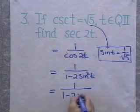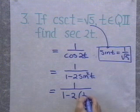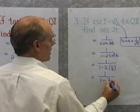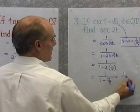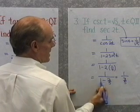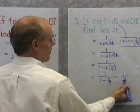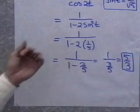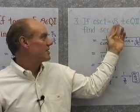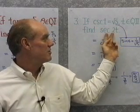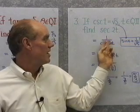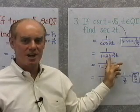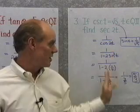So sec(2t) = 1 / (1 - 2sin²t). That's the double-angle formula for cos(2t) written in terms of just sine. Substituting: sin(t) = 1/√5, so sin²t = 1/5. Therefore: 1 / (1 - 2 × 1/5) = 1 / (1 - 2/5) = 1 / (3/5) = 5/3. So given csc(t) = √5, we find sec(2t) = 5/3. I chose this formula because it involves only the sine function, and since I'm given the sine function, I substitute in and the rest is just arithmetic.